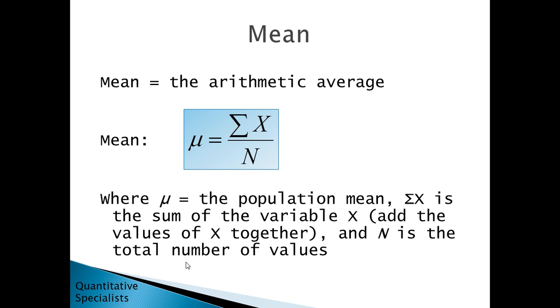Finally we'll take a look at the mean. The mean is equal to the arithmetic average. This formula says mu is equal to sum of x over n, where mu is the population mean, sum of x tells us mathematically to take the sum of the variable x, or add all the values of x together, and n is the total number of values.